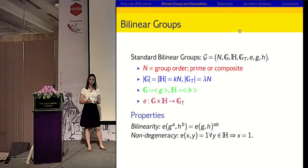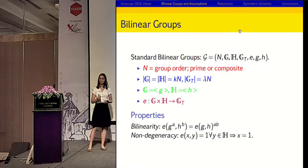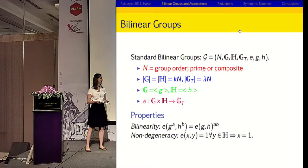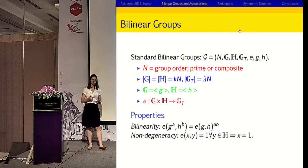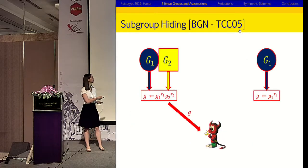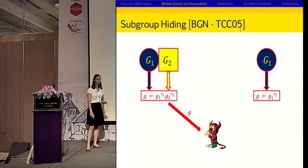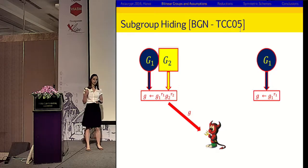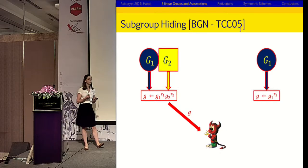Bilinear groups are when you have three elliptic curve groups — two source groups and one target group. The asymmetric setting is the case when the two source groups G and H are different; the symmetric setting is when they are the same. We also need some kind of bilinear map, so that E of G to the A, H to the B equals E of GH to the power of AB.